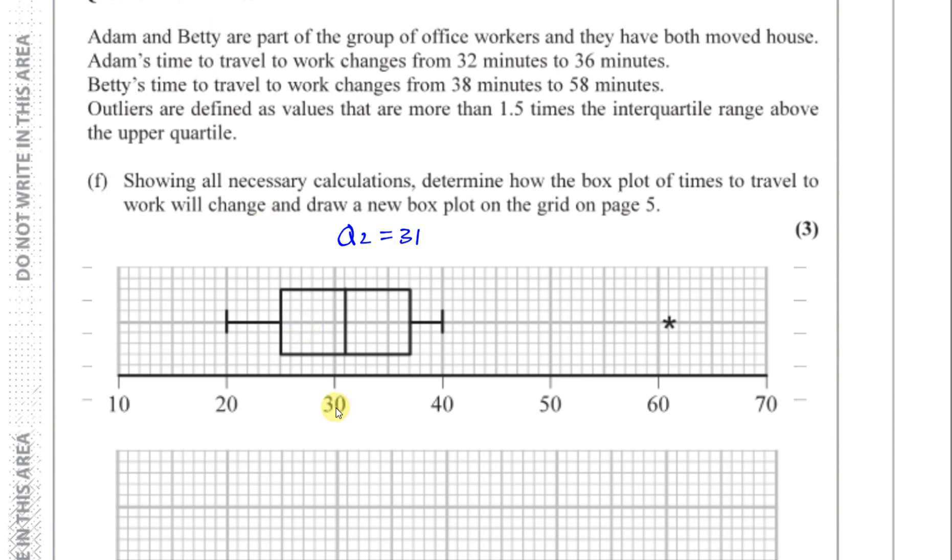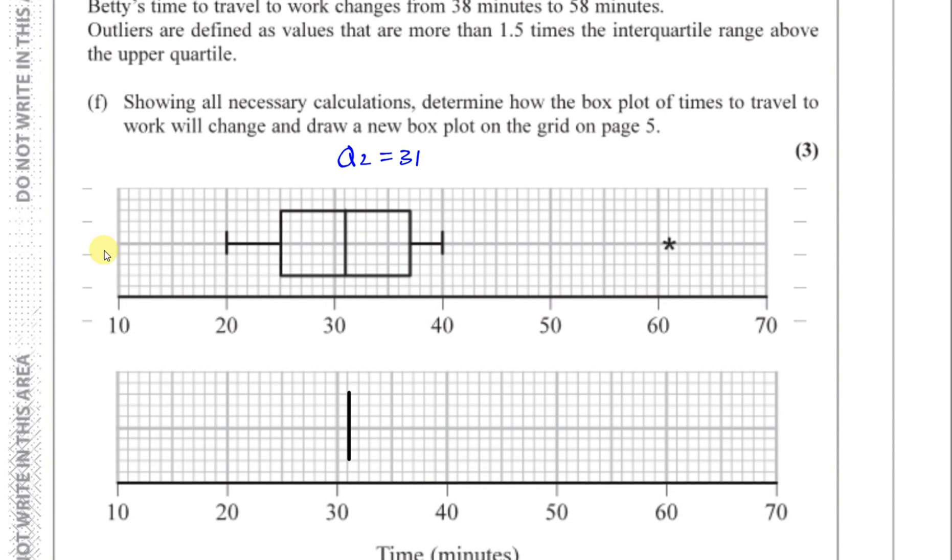Now what will change here? Well, her time changed from 38 to 58, so let's try and figure out if that's going to be an outlier. So the outlier is 1.5 multiplied by the interquartile range which is 12. So 1.5 times 12 is going to be 12 plus 6 which is 18. So therefore the outlier is going to be the Q3 which is 37, 37 plus 18, which is going to be 55. So anything greater than 55 is called an outlier.